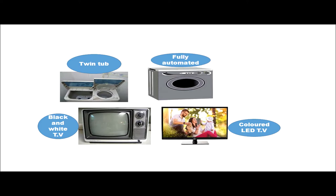For example, in olden days washing machines had two tubs where you had to manually transfer clothes. These days you simply add powder, close the machine, and everything is done automatically. Similarly, previously we had only black and white televisions; now we have color and LED TVs. This is how features are added and improved through marketing.